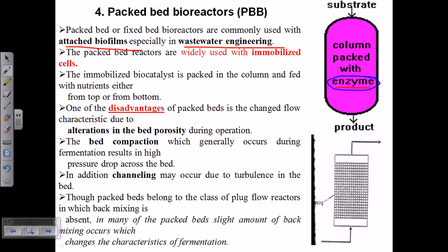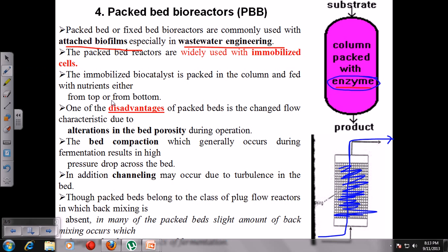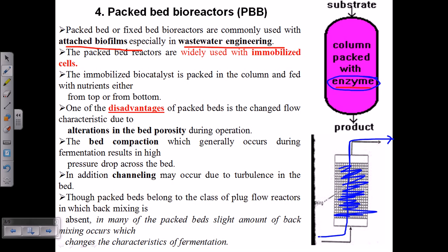So suppose this is a fermenter — we have a mat, we add microorganisms, and they produce a biofilm. As we provide our substrate through this channel, the substrate will be converted to product because of the presence of these biofilms. This red color represents the substrate which is moving and being converted into the product, because there are microorganisms in this middle region.